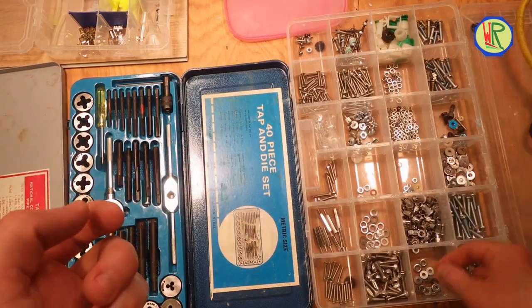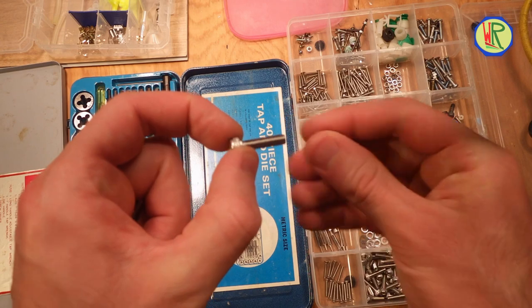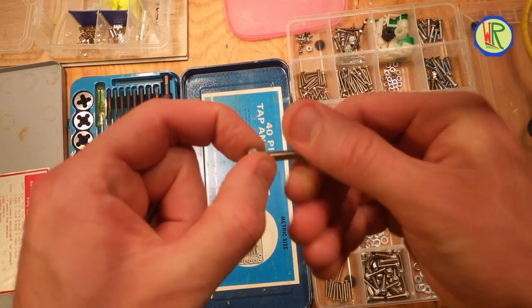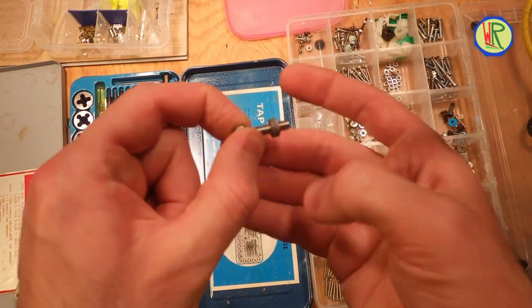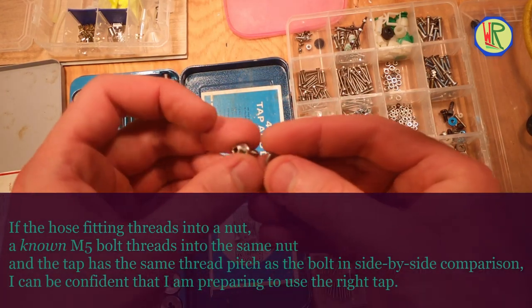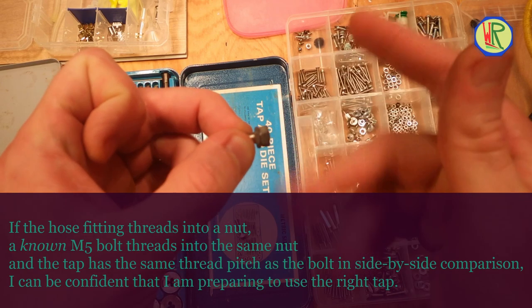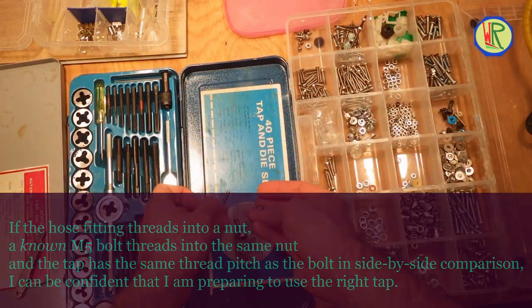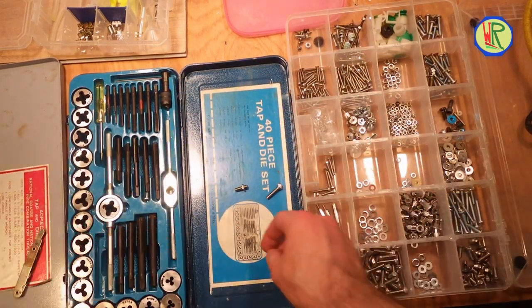So I used the more traditional way. I took a known M5 bolt and I threaded a nut onto it to make sure that it's an M5 nut. Then I used this nut to check the thread on the barbed fitting to make sure that it's also an M5. Now I knew what tap to use.